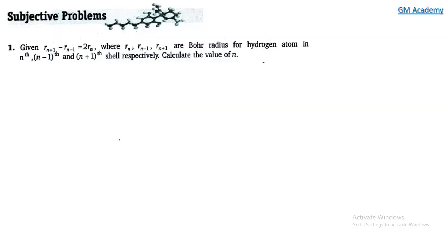Question 1: Given r(n+1) minus r(n-1) equal to 2r(n), where r(n), r(n-1) and r(n+1) are Bohr radius for respectively nth, (n-1)th and (n+1)th orbit. Then calculate the value of n.